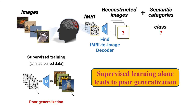Traditionally, this sparse data is used to learn the mapping between the visual stimuli and their brain activity representation. However, since the data is limited and cannot span the huge space of natural images, natural fMRI samples, and the huge semantic space, such decoders are prone to poor generalization to new held-out data.